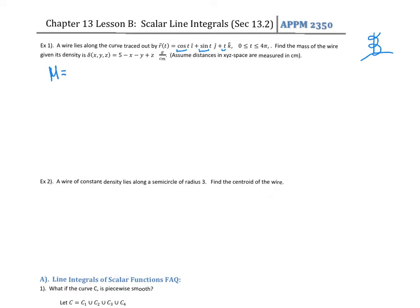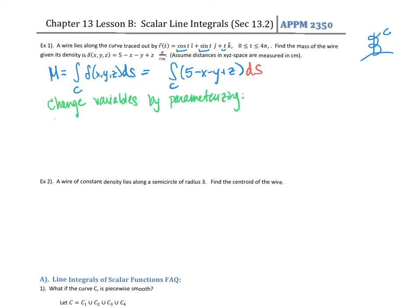Alright, so we're basically trying to figure out what is the mass of this wire given density. Mass is going to be the line integral over this curve of the density, which we can write as this. And then we're going to need to change variables by parametrizing. In this case, the parametrization is already given to us. They tell us this curve is traced out as cosine t, sine t, and t from 0 to 4π.